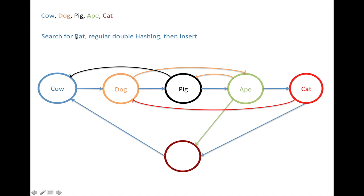And now we want to check if we have rat in the table. So the regular way would be that we would check equality with each one of these locations. First, rat is not cow, not dog, not pig, not ape, not cat. And finally, we have an empty place. So now we know that we don't have a rat in the table.